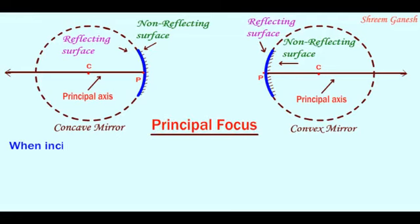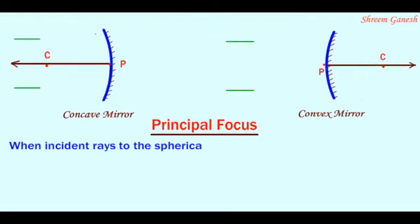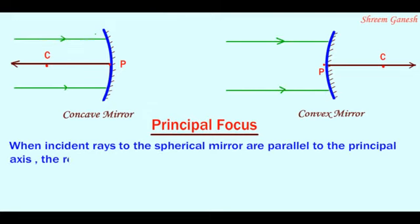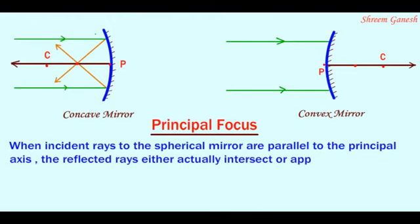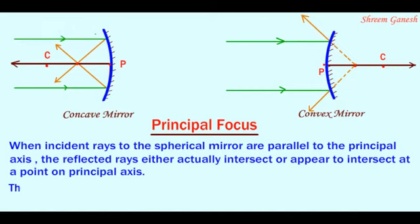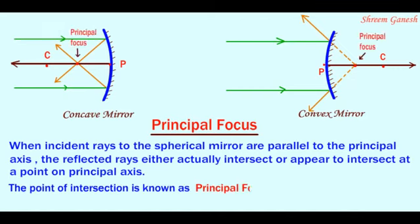Principal focus: When incident rays to the spherical mirror are parallel to the principal axis, the reflected rays either actually intersect or appear to intersect at a point on the principal axis. The point of intersection is known as principal focus.